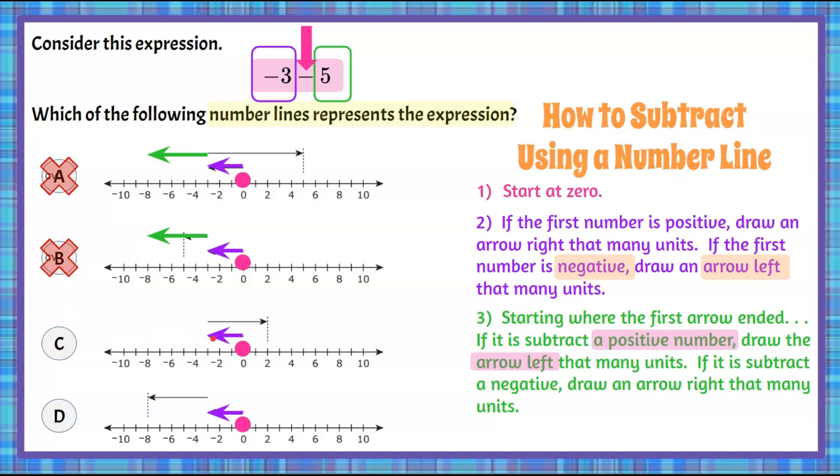Choice C, again, from where we left off at negative three, we're going to go left. They went to the right. We're going to eliminate that. Let's hope choice D does it. We're going to go left five and identify our answer of negative eight. Answer choice D.